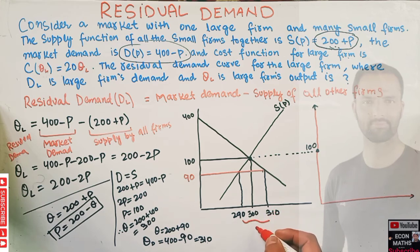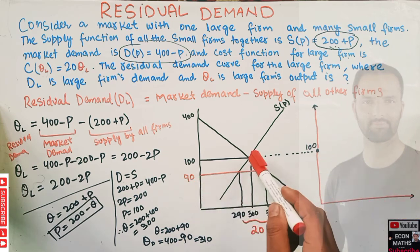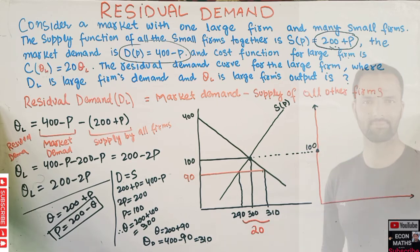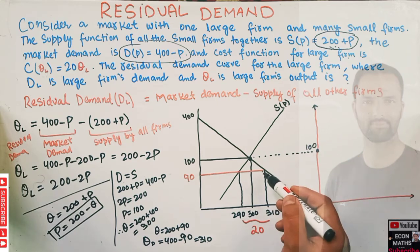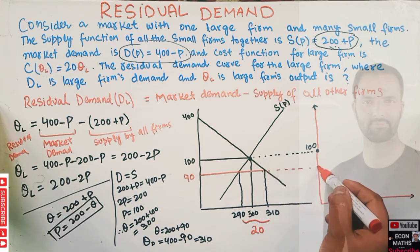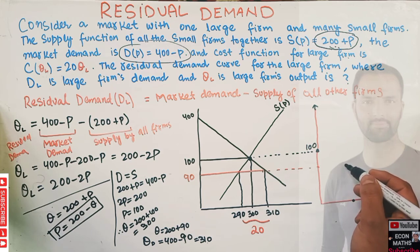The residual demand at P = 90 is: 310 − 290 = 20. So when price was 100, residual demand was zero, but when price falls to 90, the residual demand for the large firm becomes 20.